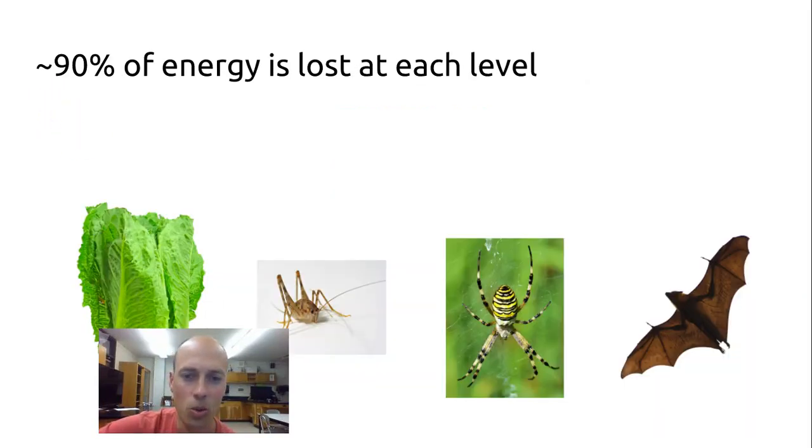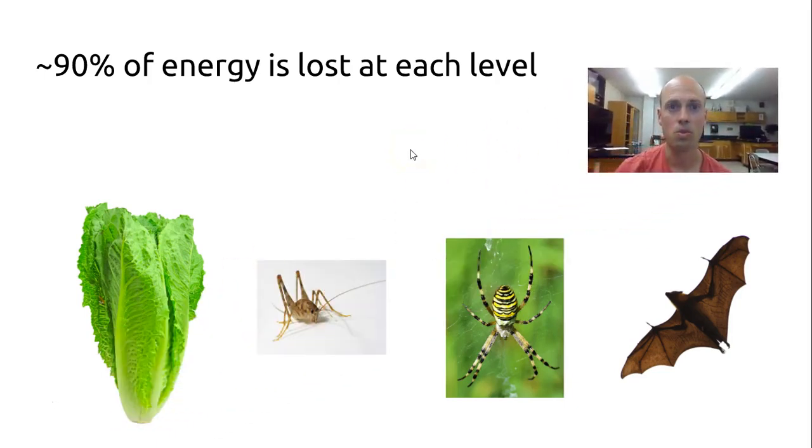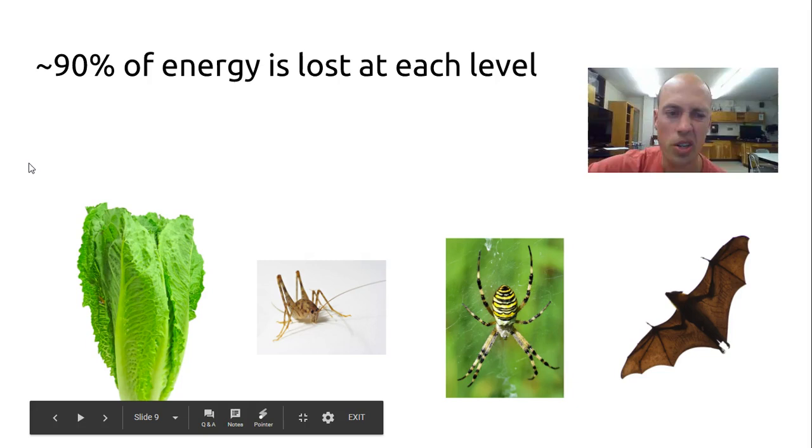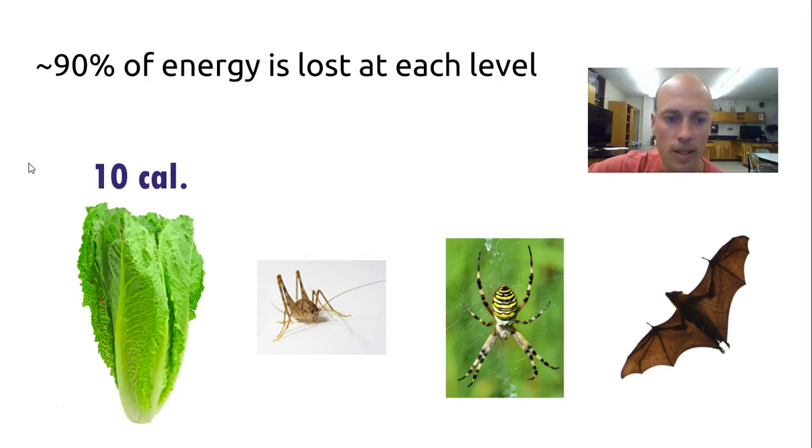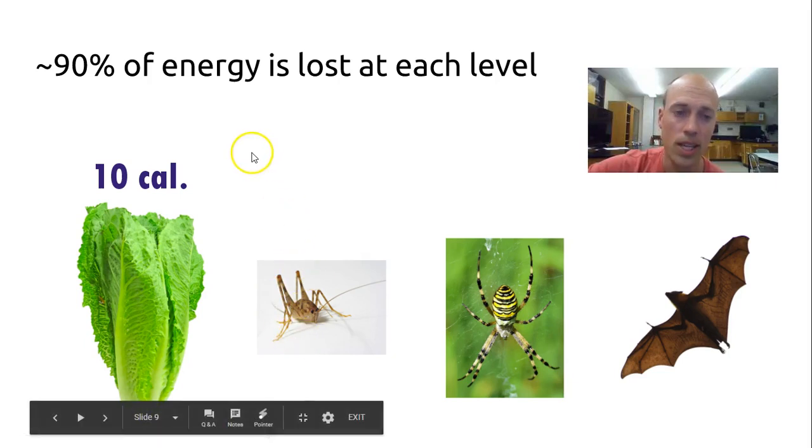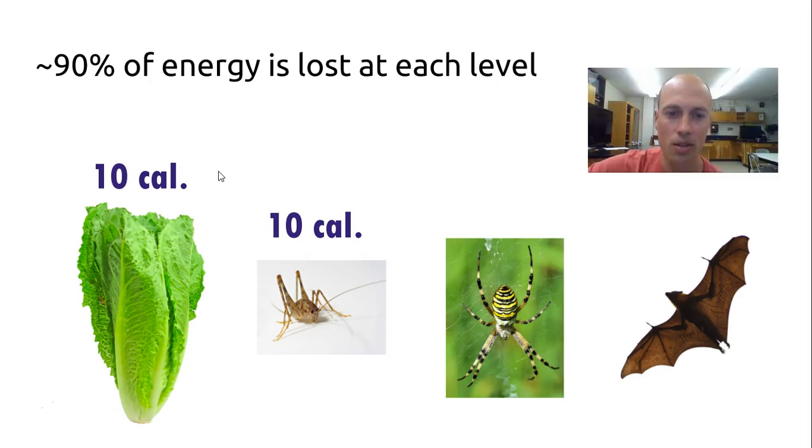It should be noted that only 10% of the energy that is produced by the producer goes on to the next level. For instance, let's say there's a head of lettuce here, and there are 10 calories worth of lettuce. When the primary consumer, this cricket, eats those 10 calories of lettuce, about 10% of that goes toward its body and goes toward the food that makes up that body of the cricket. 90% of that energy from the lettuce is lost to do normal body functions within the cricket. So 90% of that energy is lost.